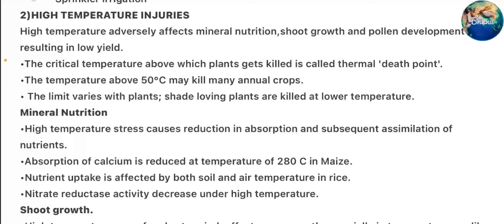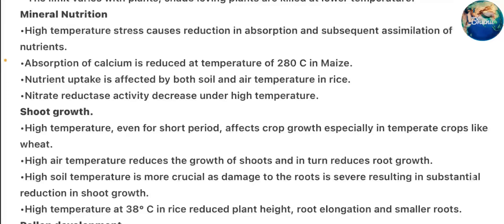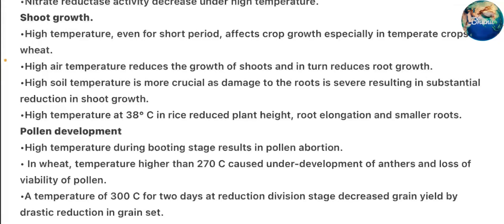High Temperature Injuries: High temperature adversely affects mineral nutrition, crop growth, and pollen development, resulting in low yield. The critical temperature above which plants get killed is called the thermal death point — temperatures above 50°C may kill many annual crops. The limit varies with plants; shade-loving plants are killed at lower temperatures. High temperature stress causes reduction in absorption and assimilation of nutrients. Absorption of calcium is reduced at temperatures above 28°C in maize. Nutrient uptake is affected by both soil and air temperature in rice. Nitrate reductase activity decreases under high temperature. High temperature, even for short periods, affects crop growth especially in temperate crops like wheat. High air temperature reduces shoot growth and in turn root growth; high soil temperature is more crucial as damage to roots is severe.